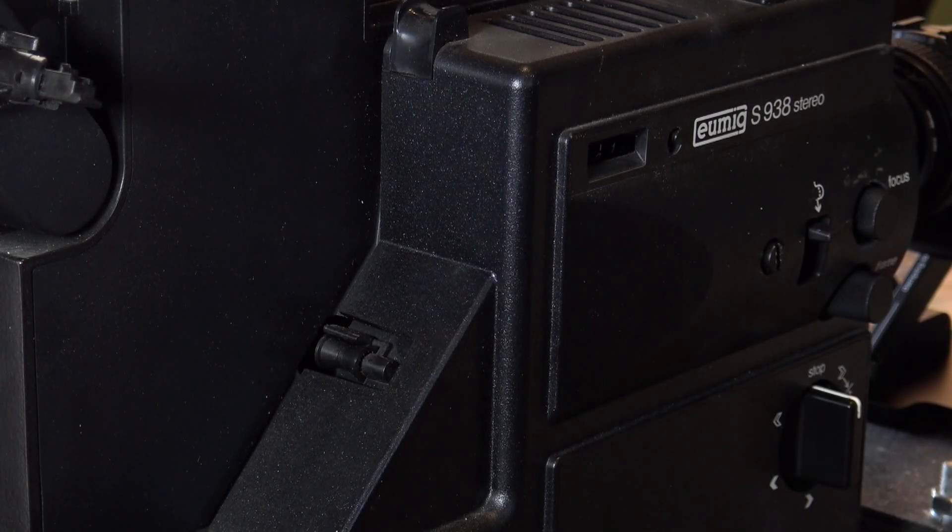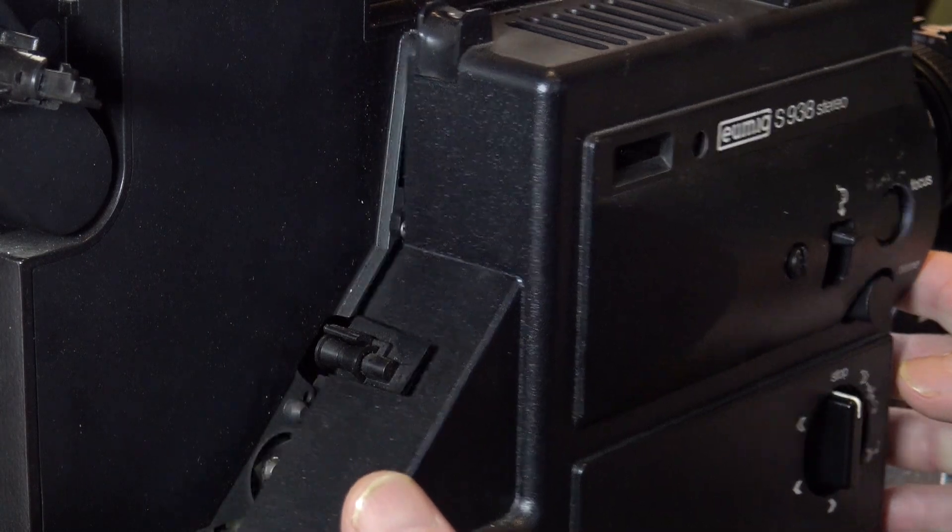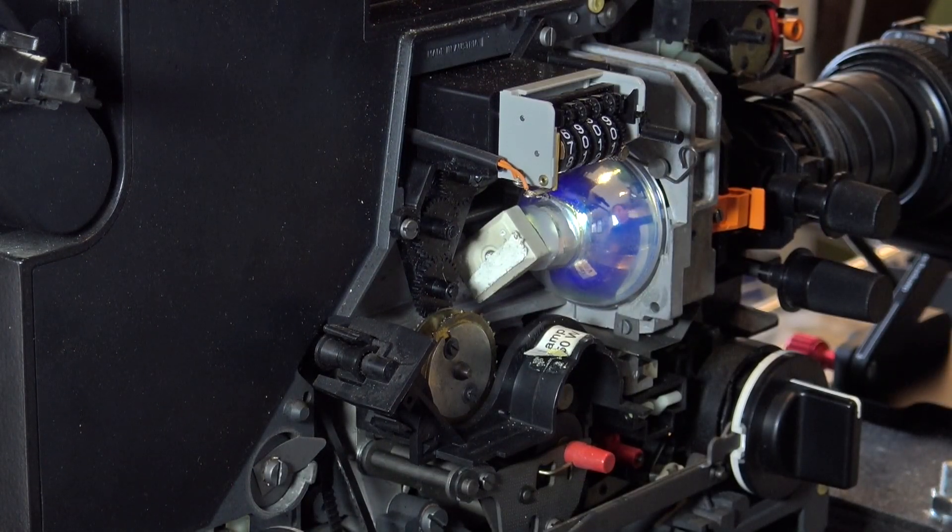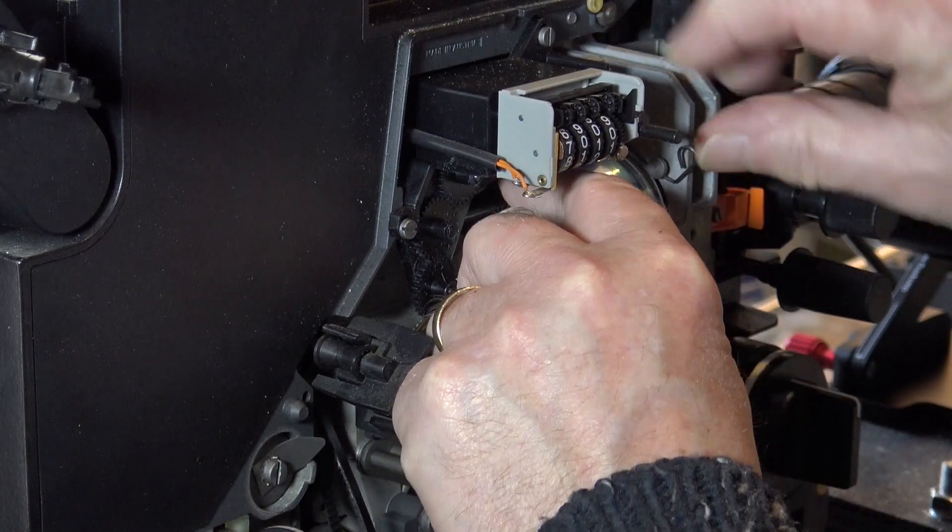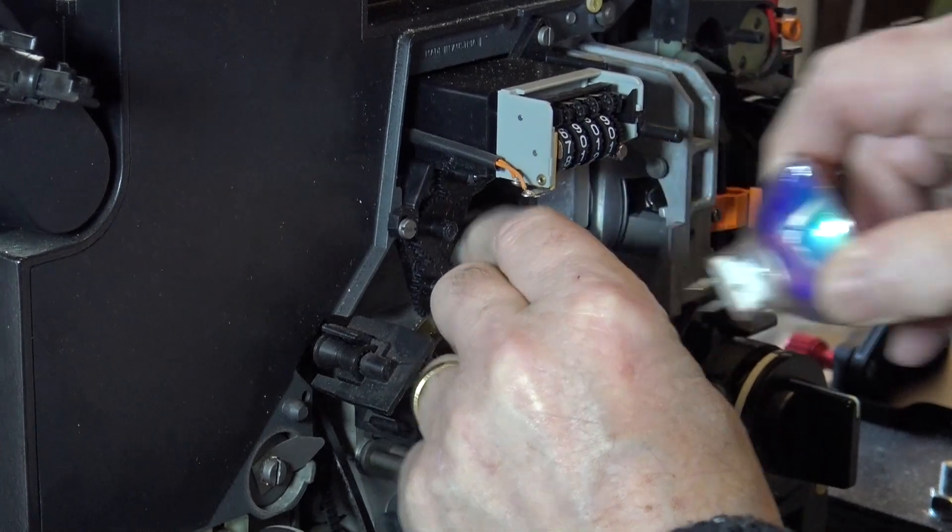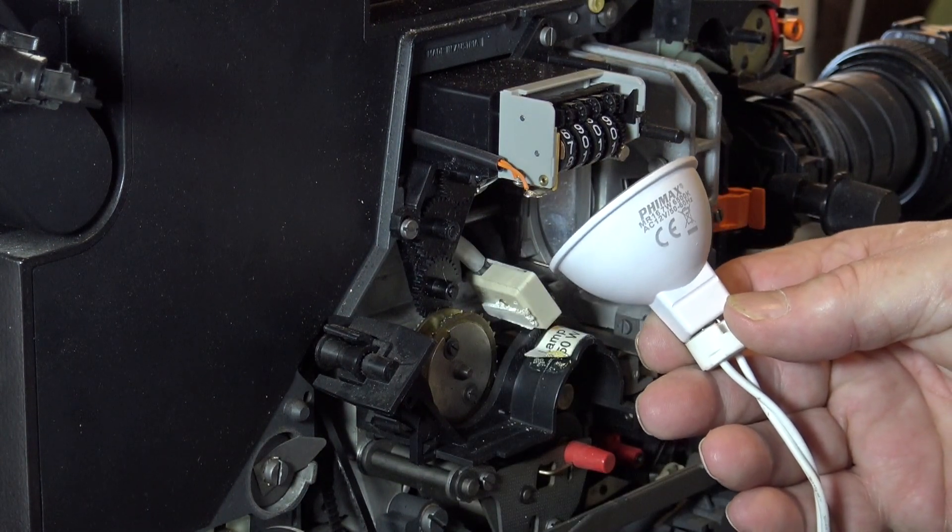To convert this projector to a telecine projector, remove the front cover. You have to take out the original lamp and replace it with this LED low wattage soft lamp.